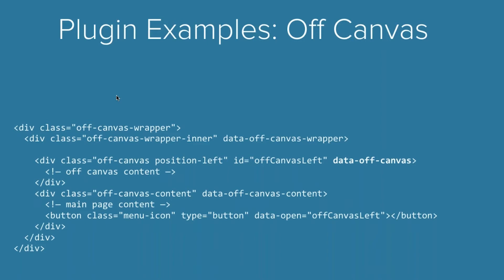The only thing that has changed is the outer section: the wrapper and wrapper inner are no longer necessary. You can actually set up an off canvas with just the inner piece — the off canvas itself and the off canvas content. The off canvas itself is what lives off canvas — your menu, your panel, or whatever is happening there.